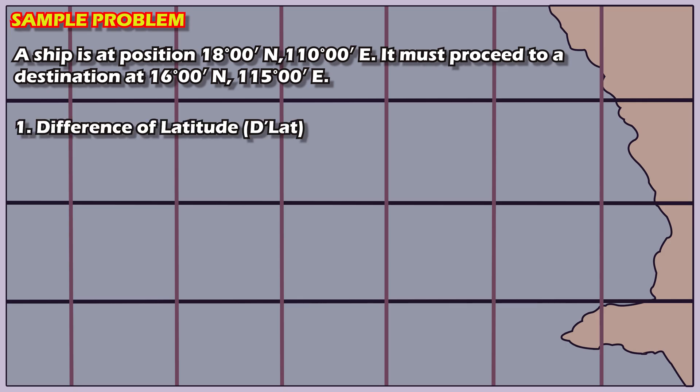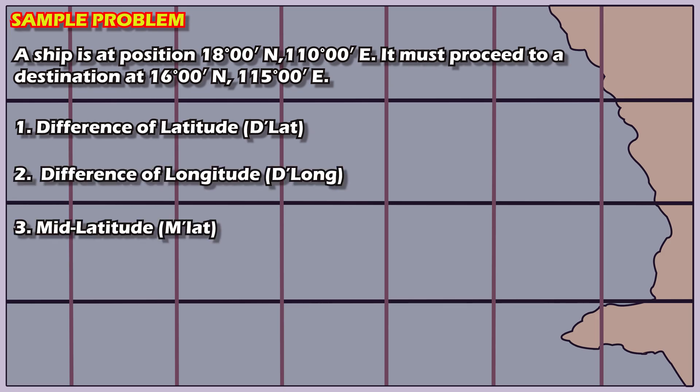Using plane sailing, we need to calculate the following. The difference of latitude. Second, the difference of longitude. Third, the mid-latitude. Fourth, the departure, using the mid-latitude. Fifth, the distance between the two positions. And sixth, the course angle to steer, assuming plane sailing.